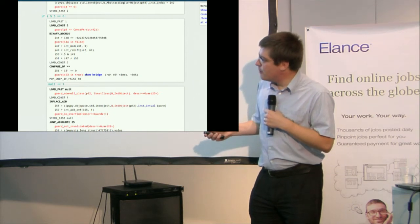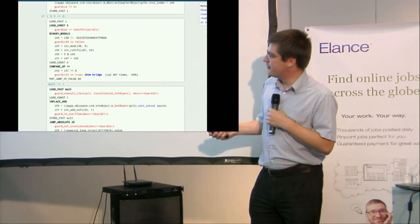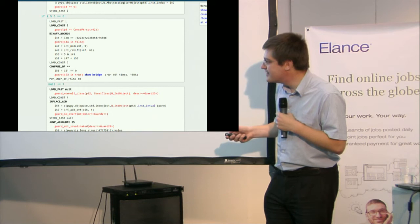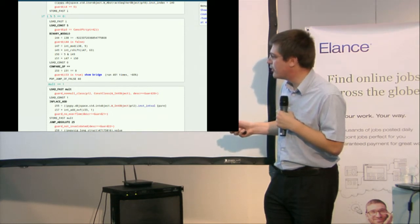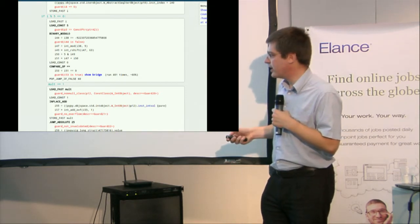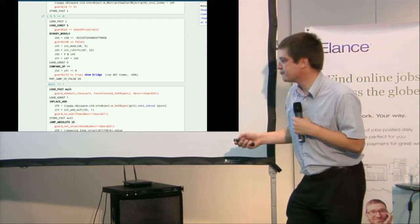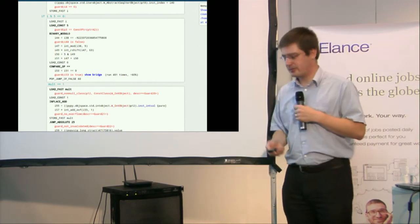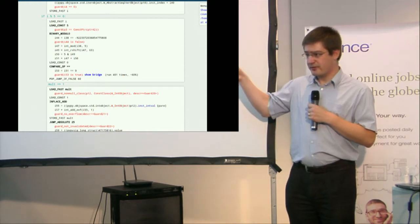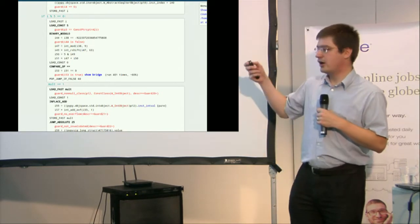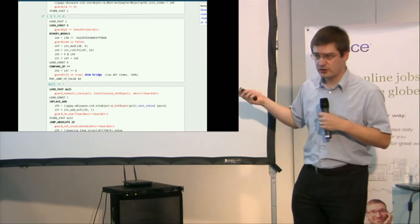And then, interesting, mult plus equals one. The load fast is just a gap now. Load const one has been completely removed. And when we add something, then we just access the integer field of this number, and we add it. And there is a set probably behind. And we check that we didn't overflow. Otherwise, it's still another path.